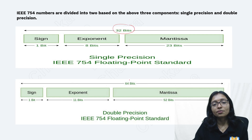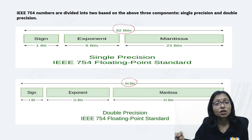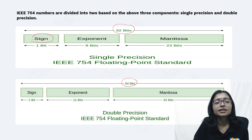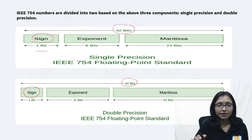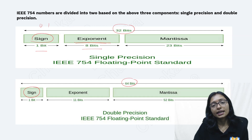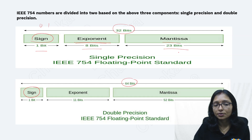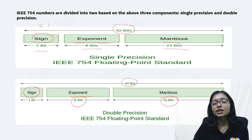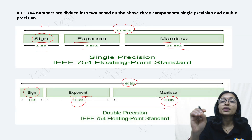There are two types of representation: one is 32-bit representation, another is 64-bit representation. In 32-bit representation, the sign bit is 1 bit, the exponent bit is 8 bits, and the mantissa bit is 23 bits. In 64-bit representation, the exponent bit is 11 bits and mantissa is 52 bits. This is the standard.